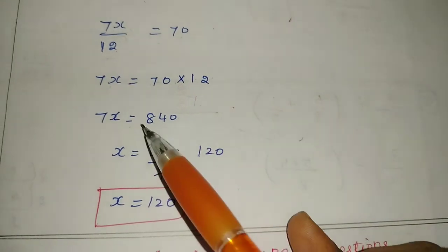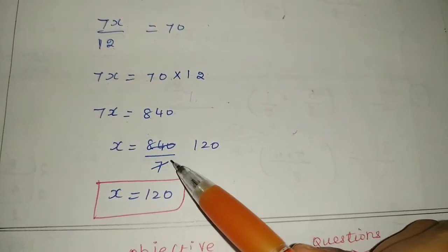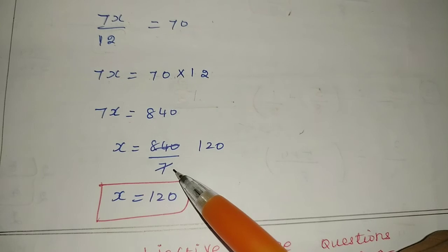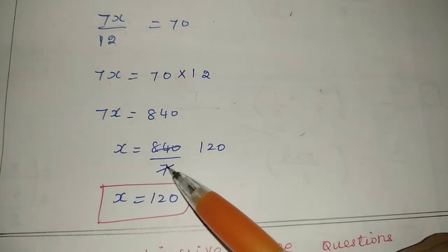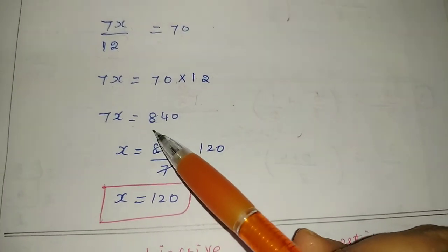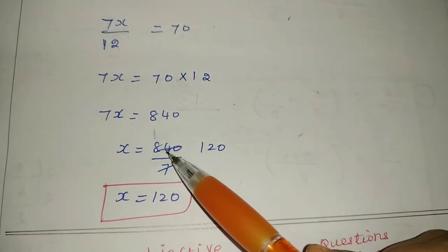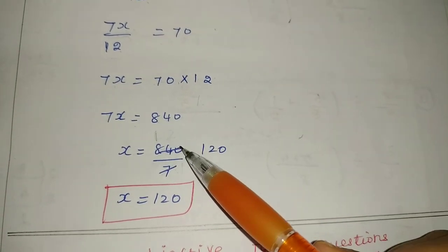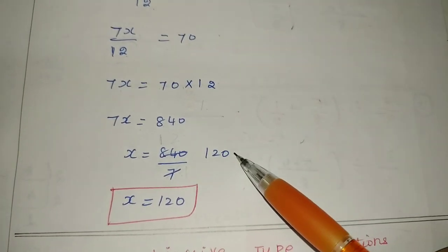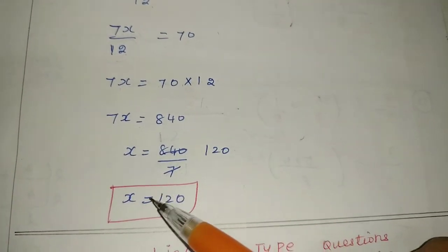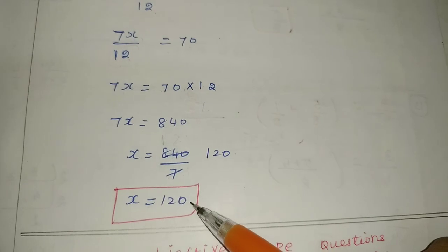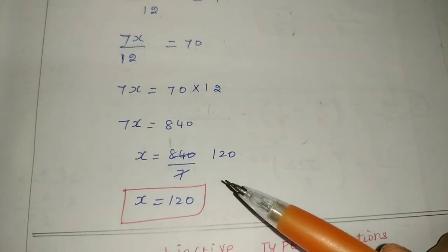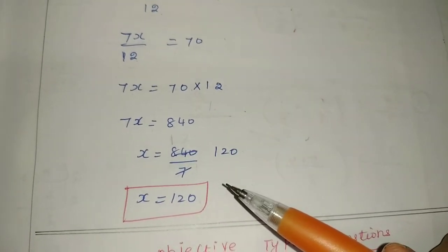Now it's a multiplication, so taking 7 to the other side means division: x = 840 divided by 7. 840 ÷ 7 = 120. So the value of x is equal to 120. Clear. Thank you.